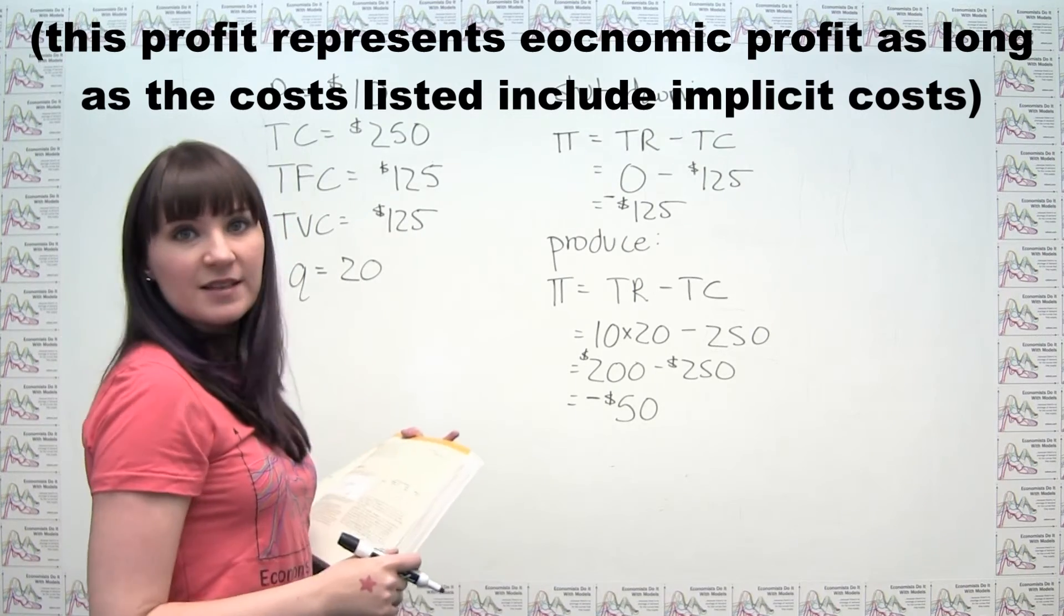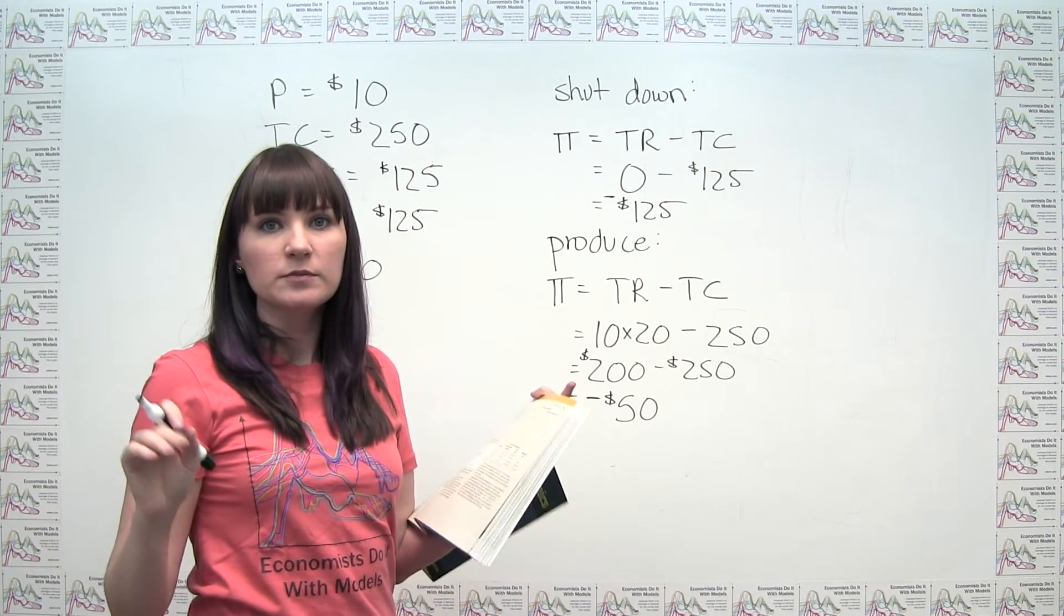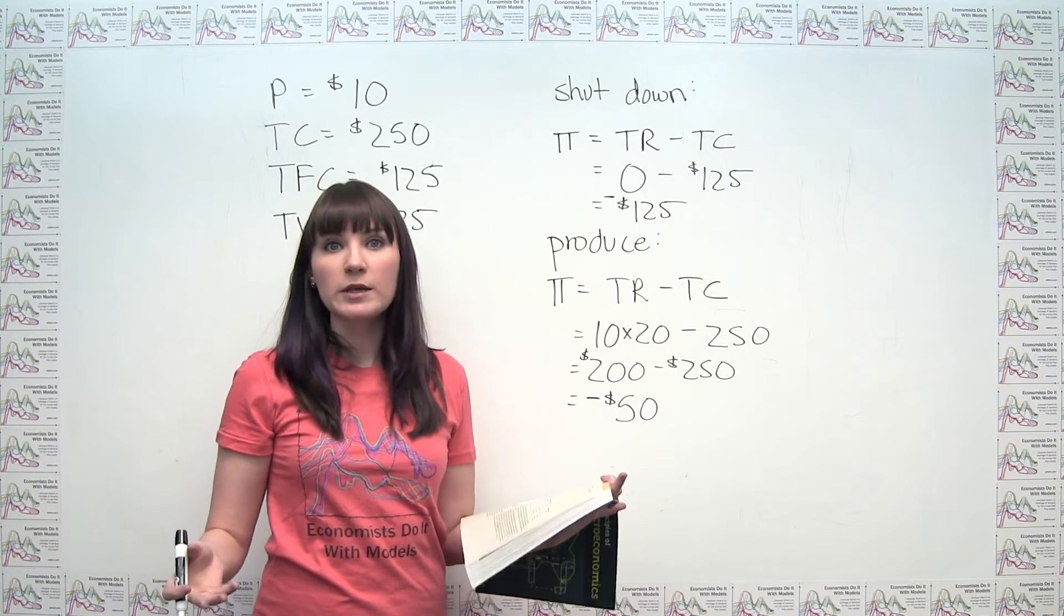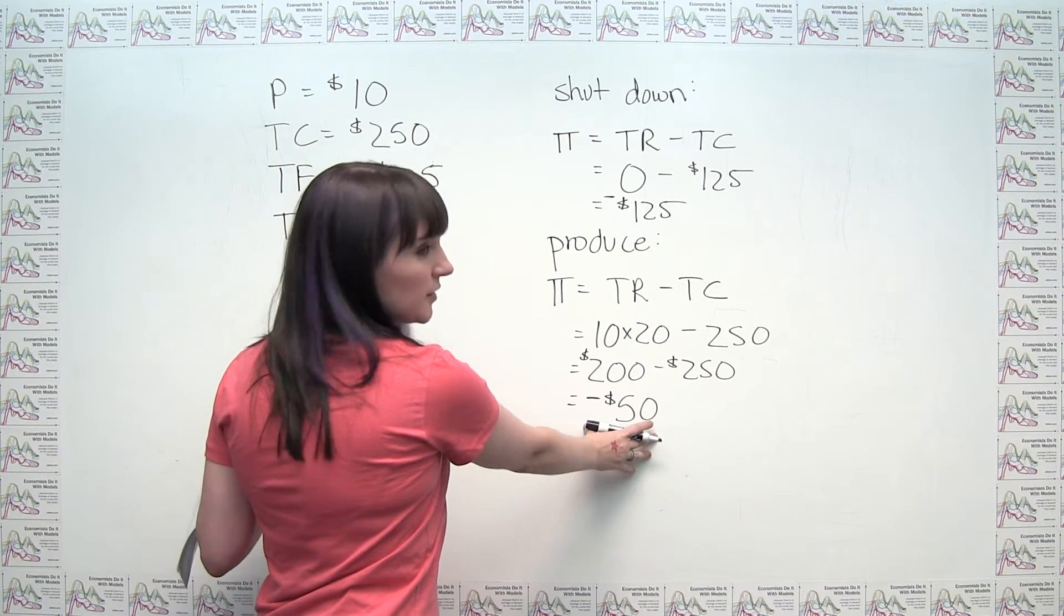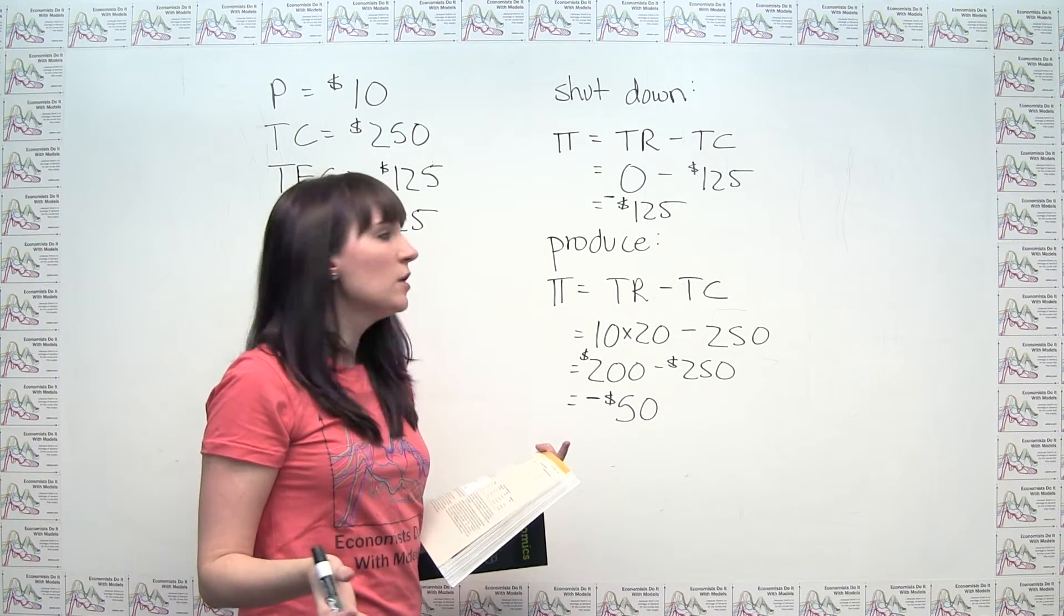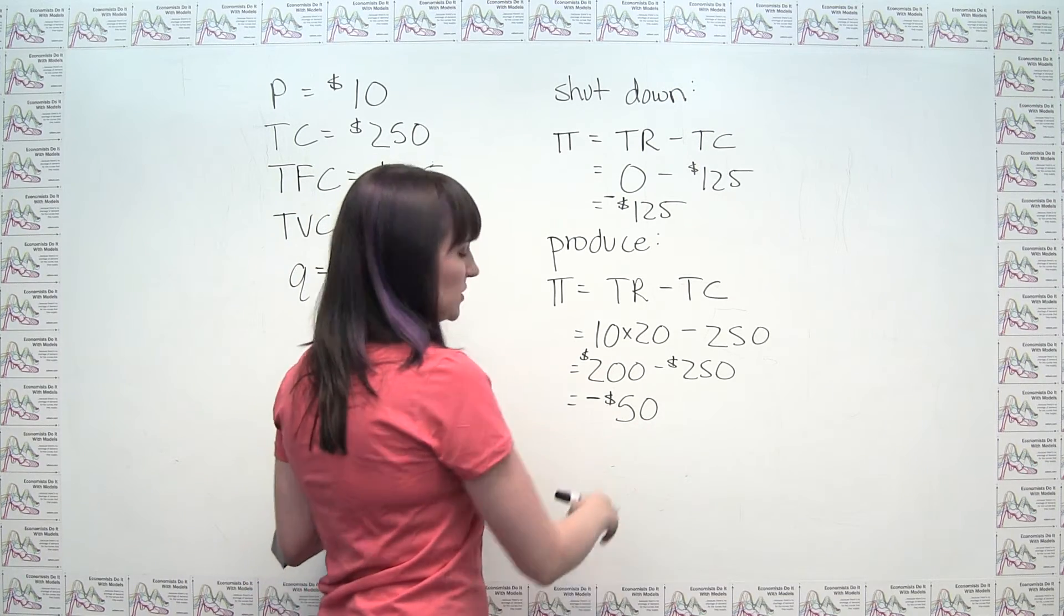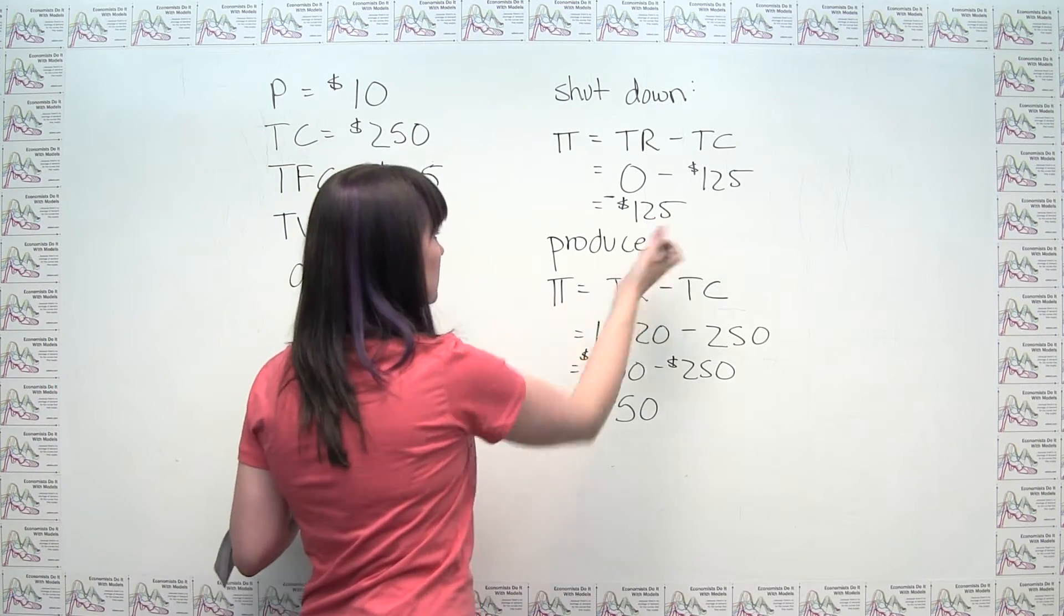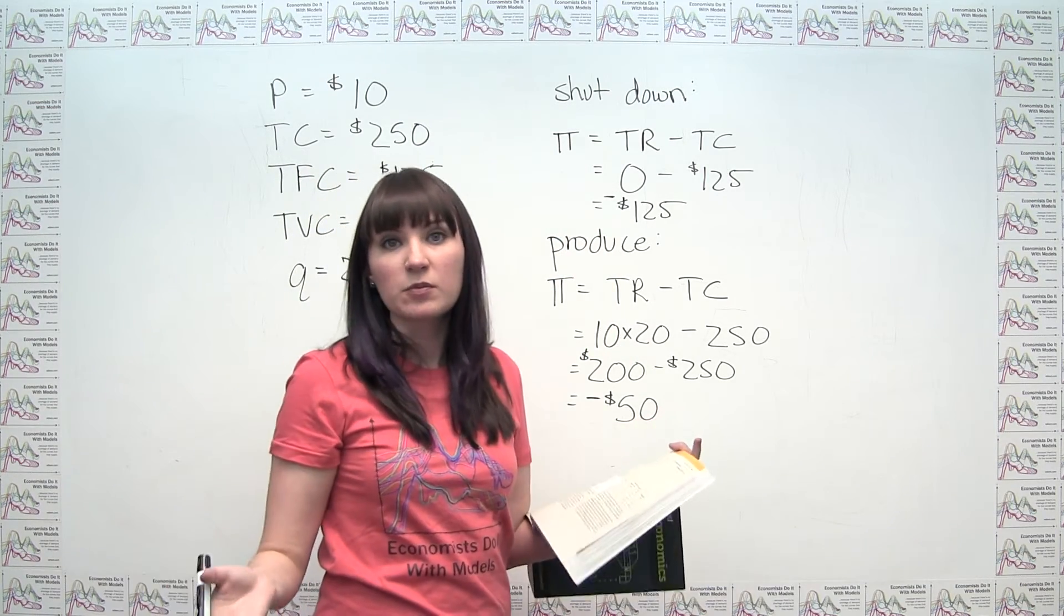So upon first glance, this looks bad, right? Profit is negative $50. However, in the short run, we don't have an option of getting to a profit equals zero point. So what we're really comparing is would you rather produce and get negative $50, or shut down and get negative $125? I don't know about you, but I would rather produce and get my negative $50, because then at least I've gone part of the way to paying back this $125 fixed cost. Whereas here, I've got to figure out how to come up with that in a way that doesn't involve producing what I'm currently supposed to be producing, right?